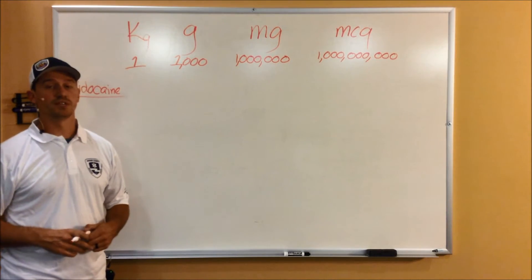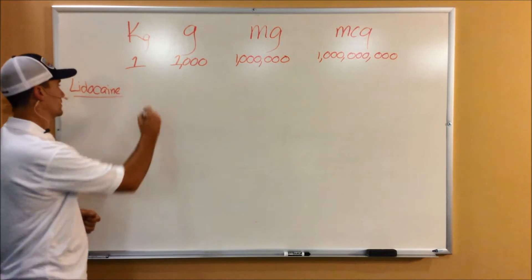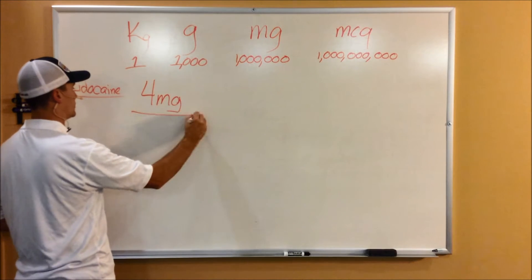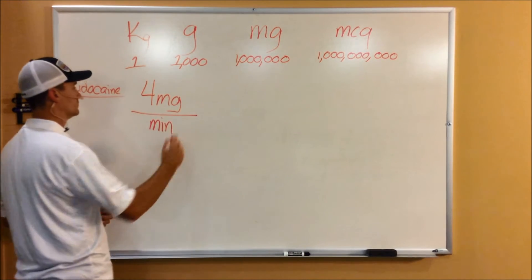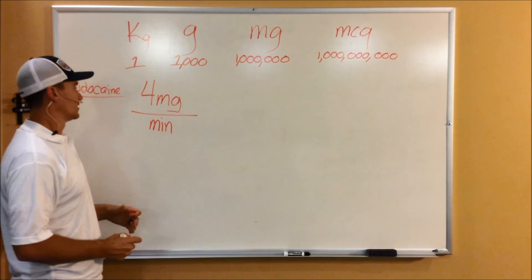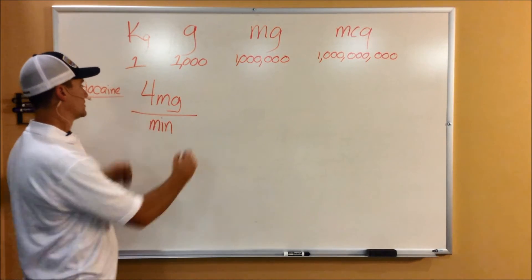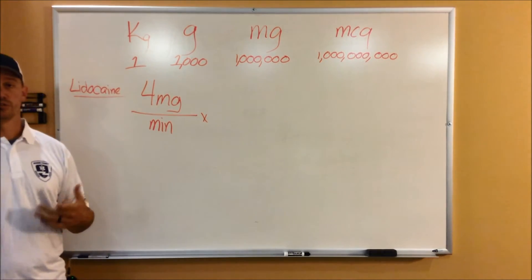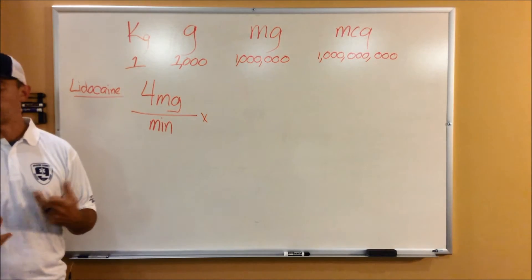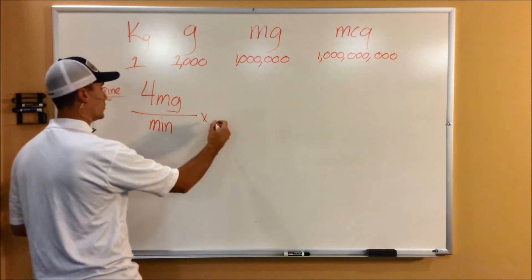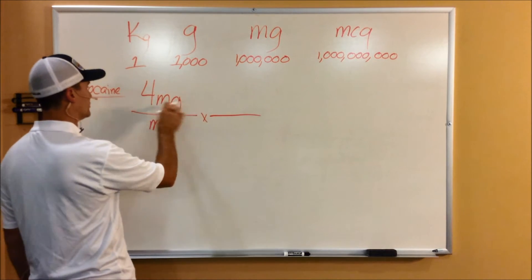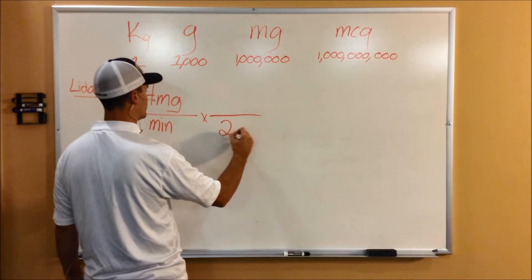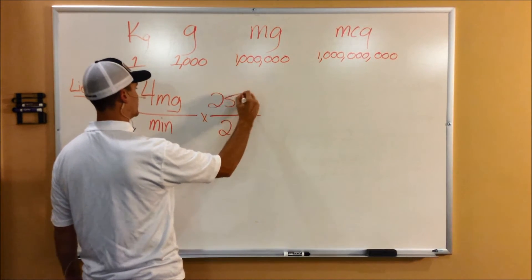So say if the dose you're ordered to give is four milligrams per minute. So you'll write it out as four milligrams per minute. So with every dose and every medicine, it's your dose times your concentration. Well, in most lidocaine concentrations, two grams per 250 ml. So the way you need to write that out is you've got your milligrams here, so grams needs to be on the bottom so you can cross those out. So two grams, 250 milliliters.